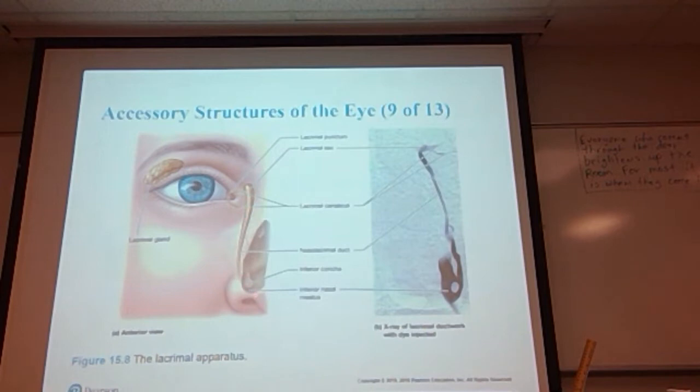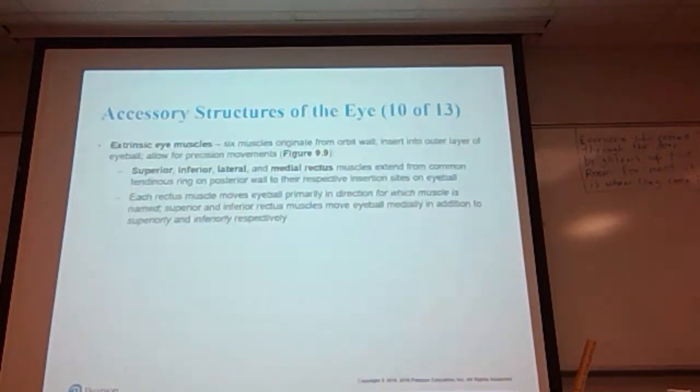Again, here is the lacrimal gland, the lacrimal puncta right there, the lacrimal sac, nasolacrimal duct, and then where it enters the nose. So the tears are produced here, drain into the eyeball where they are collected here, and then drain down. When you're watching a sad movie and start to cry, the excess tears gather here and you get a nice runny nose when you're crying.